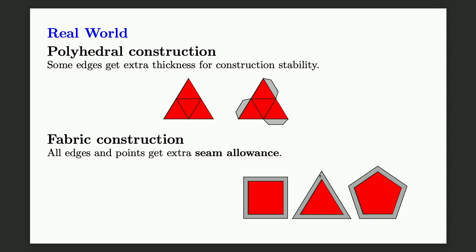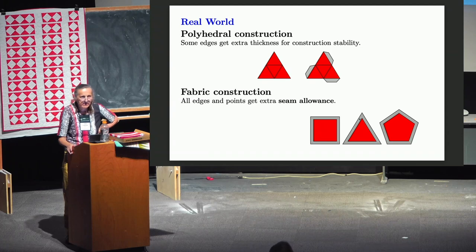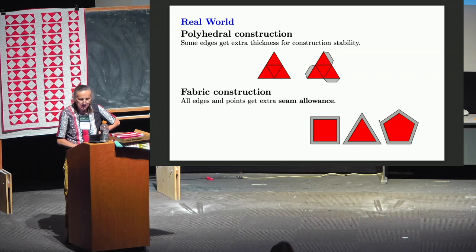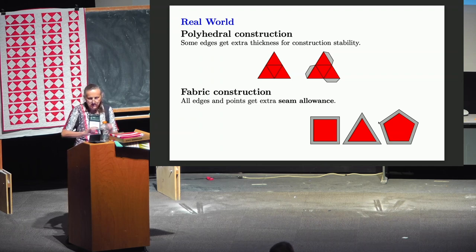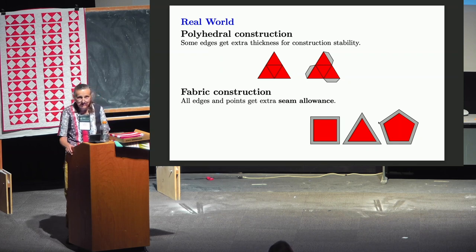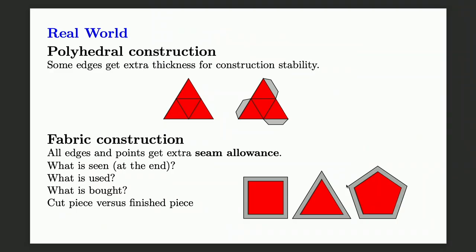Maybe we could even round off the corner, but cutting in a rounded way is time-consuming, so we usually don't do that. In fabric construction, if you're trying to do things fast and in a streamlined way — which I like to do — then you probably don't do that much rounding. The question in fabric construction is: what is seen at the end? What is actually used, what is bought, and what is the cut piece versus the finished piece?